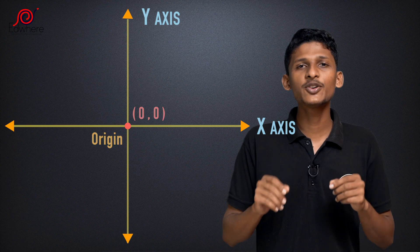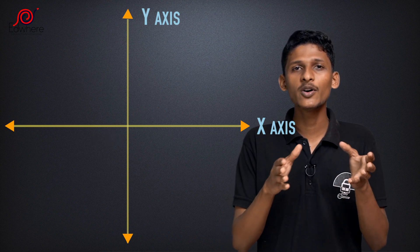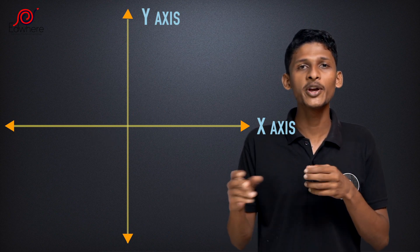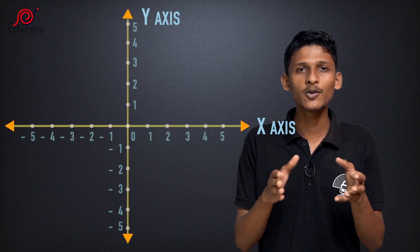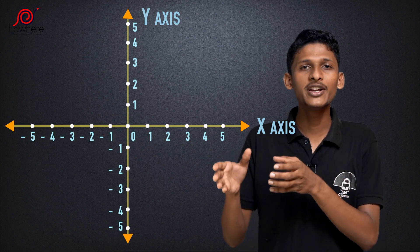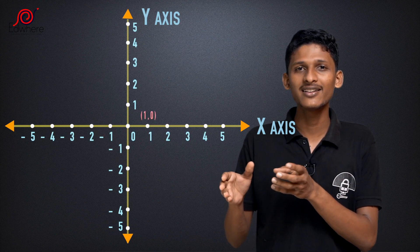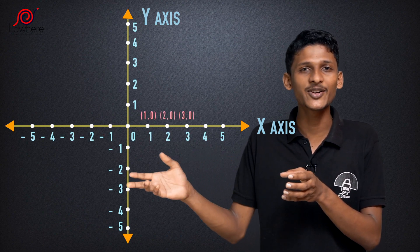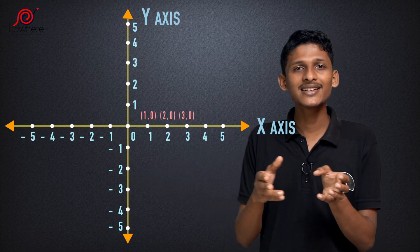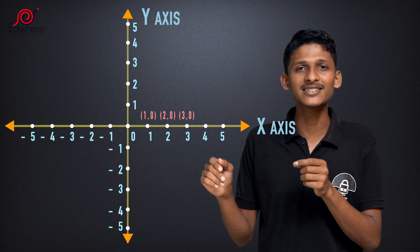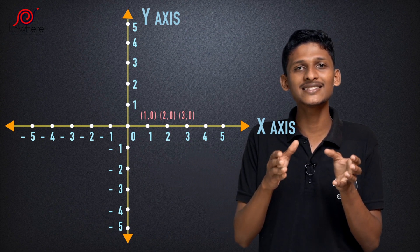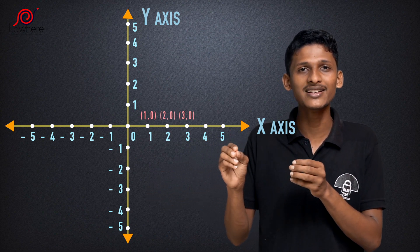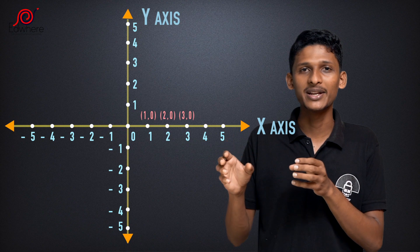If we have a point here — now, we have a point here. One point is (1, 0). One point is (2, 0). If you don't know anything about this, in the x-axis, we have all the points here. The y-value is 0.